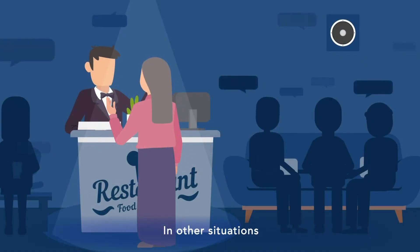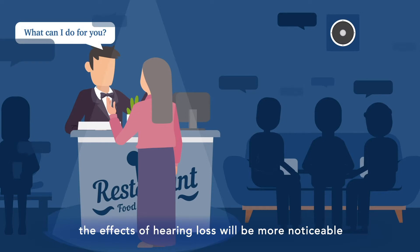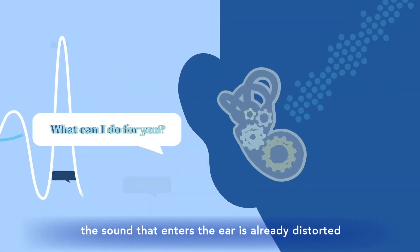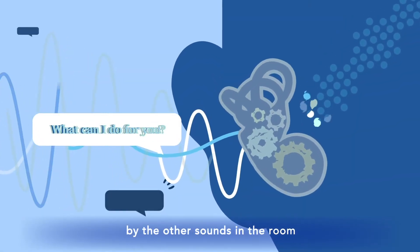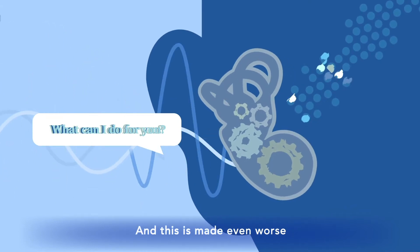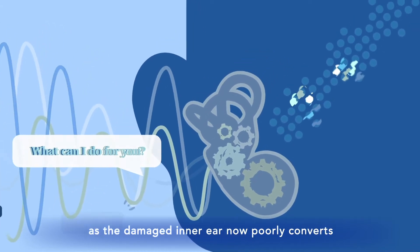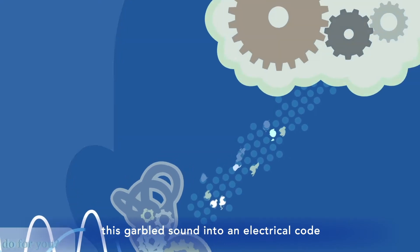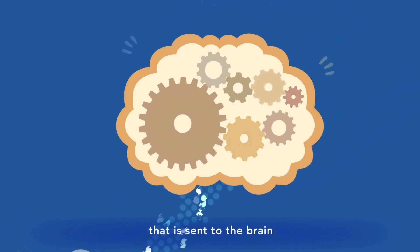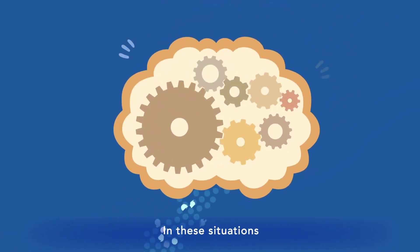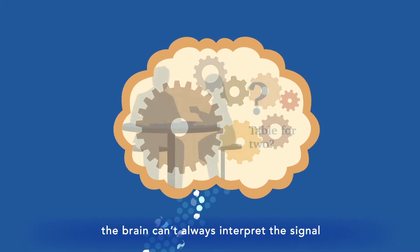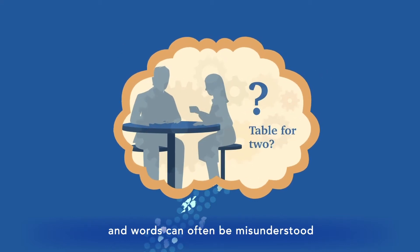In other situations, the effects of hearing loss will be more noticeable. In noisy rooms, the sound that enters the ear is already distorted by the other sounds in the room. And this is made even worse as the damaged inner ear now poorly converts this garbled sound into an electrical code that is sent to the brain. In these situations, the brain can't always interpret the signal and words can often be misunderstood.